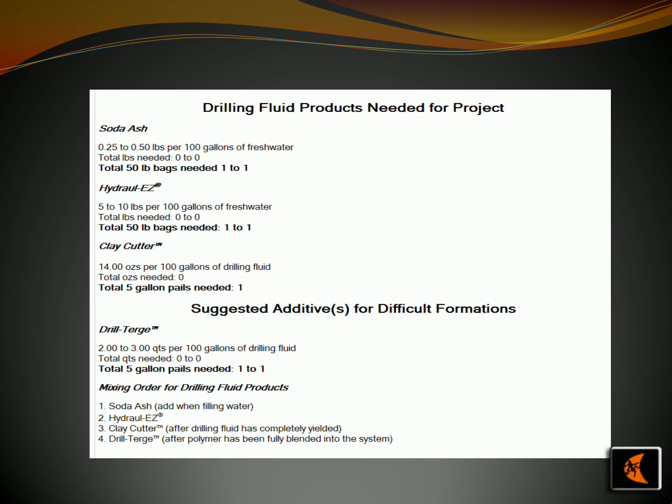Drill Turge should be used at a rate of 2.0 to 3.0 quarts per 100 gallons of drilling fluid. The mixing order for the drilling fluid products should be soda ash when filling water, Hydrol-EZ after drilling fluid has completely yielded, and clay cutter after polymer has been fully blended into the system.